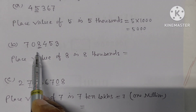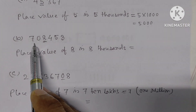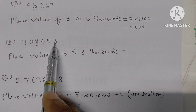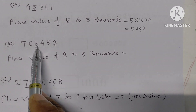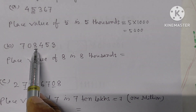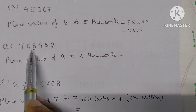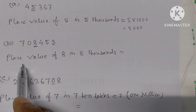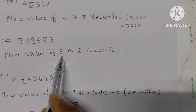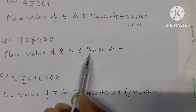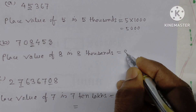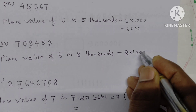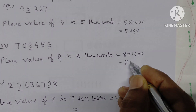The number is 78,453. This 8 is in the thousands place. The place value of 8 is 1,000 times 8, that is 8,000. We write: place value of 8 is 8,000.